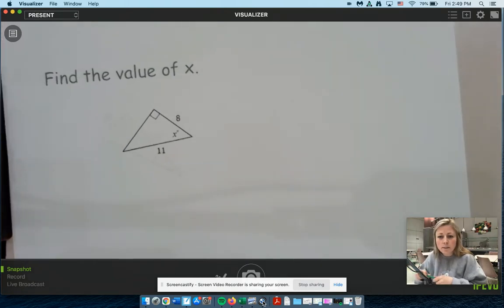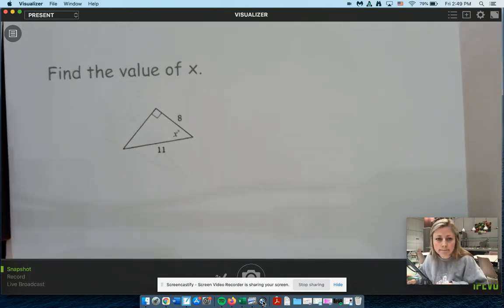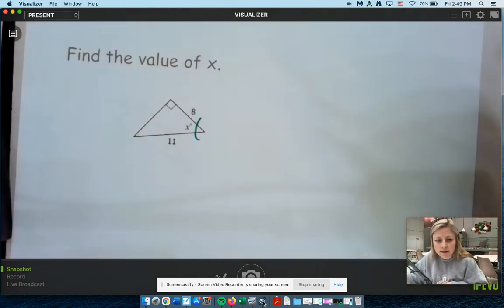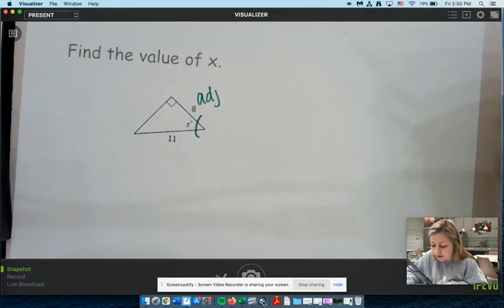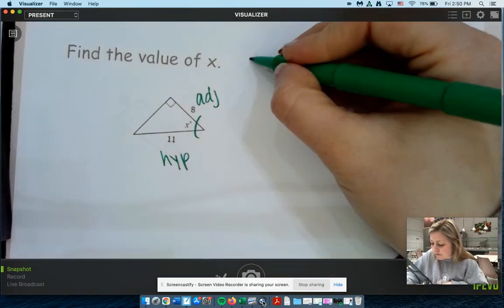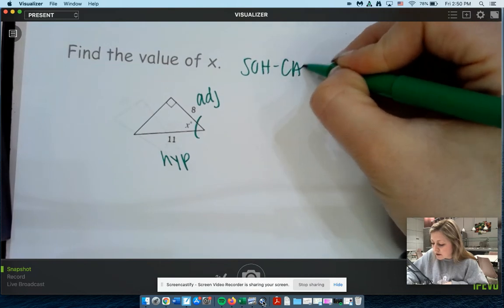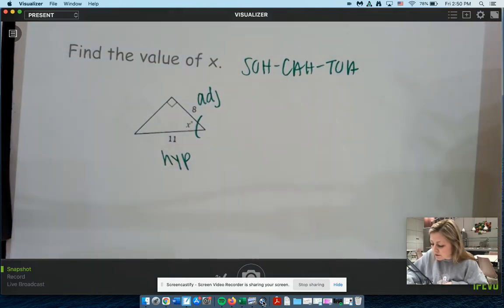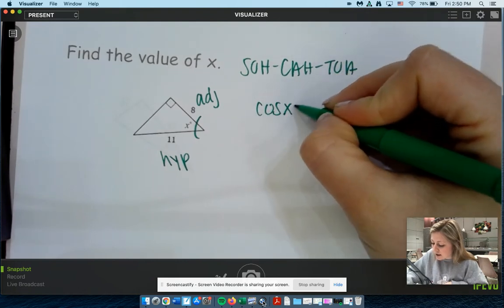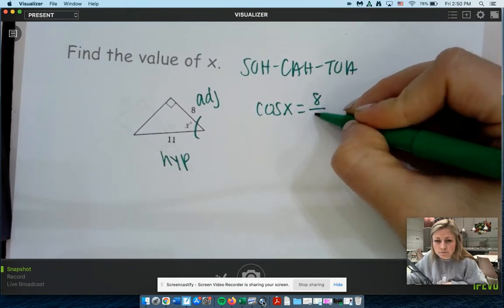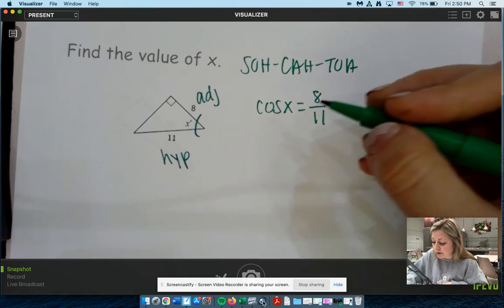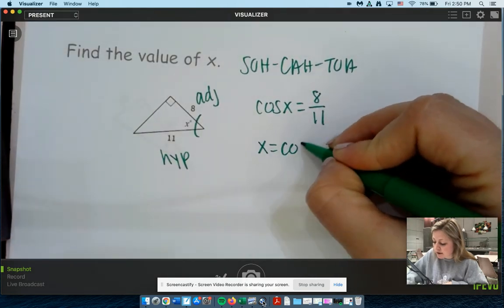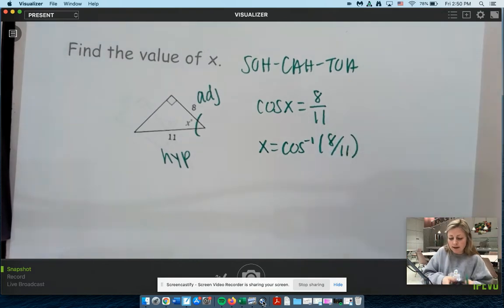So again, we start off by labeling our angle. Label your sides. 8 is attaching it. So it's attached. So that's our adjacent. 11 is across from that right angle. So that's our hypotenuse. So now from here, which trig function uses adjacent hypotenuse. That's cosine. So cosine x equals adjacent over hypotenuse. So 8 over 11. Now we want to take the inverse.